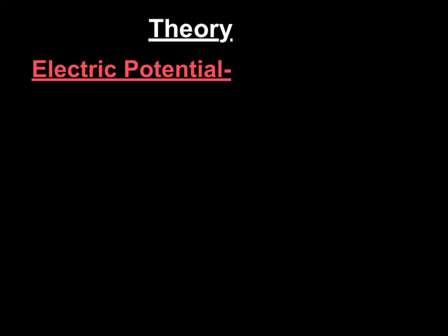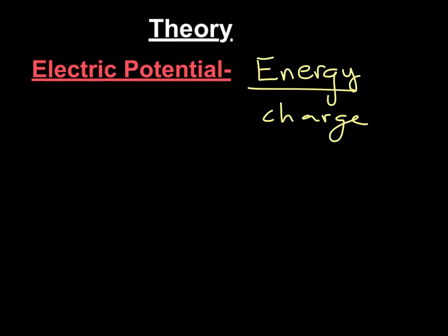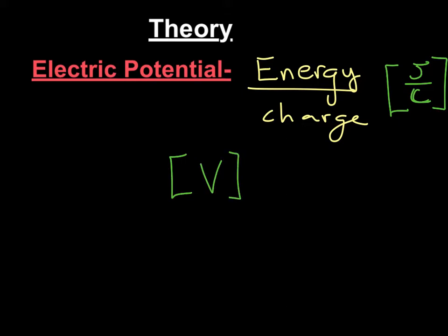Your electric potential is the energy per charge — for every piece of charge you have, how much energy does it take to put that charge there? The units of this are joules per coulomb, joule being energy, coulombs being charge. However, these also have the unit of volts, or voltage, which you've heard about. So how does this relate to the electric field?